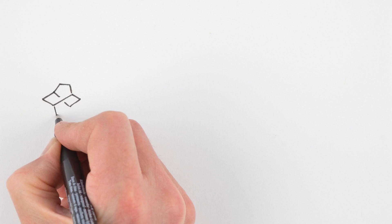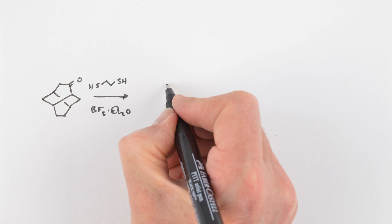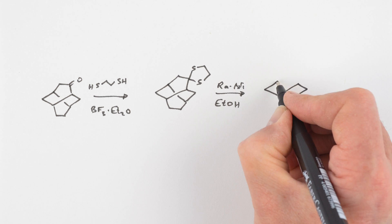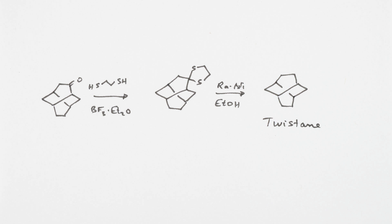But Delenchon deoxygenated it by forming the thioketal followed by desulphurization with rainy nickel, which presumably gave a higher overall yield than the one-step Wolff-Kishner. So we've seen two nifty synthesis of a neat molecule using second-year organic chemistry material.